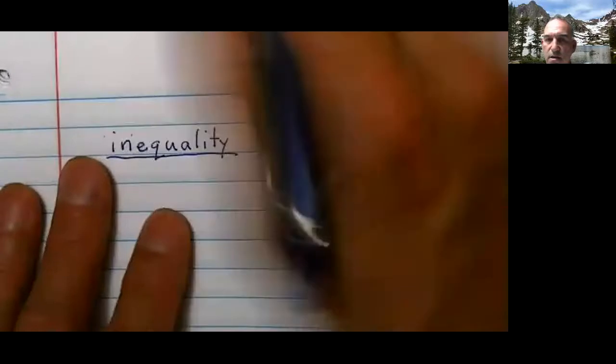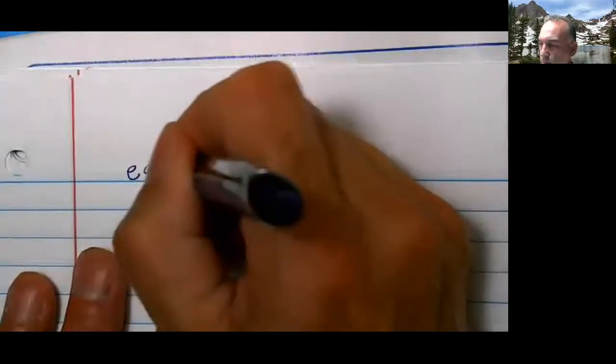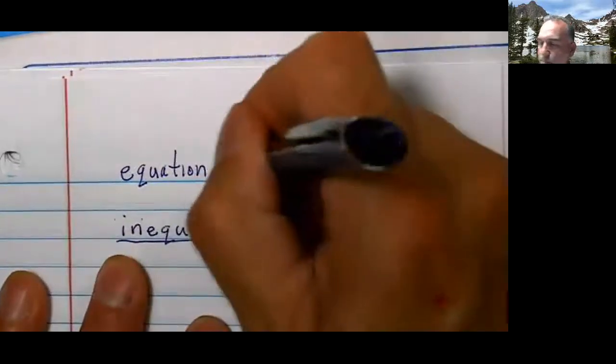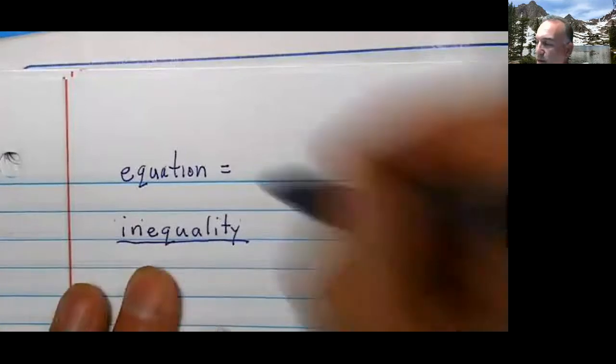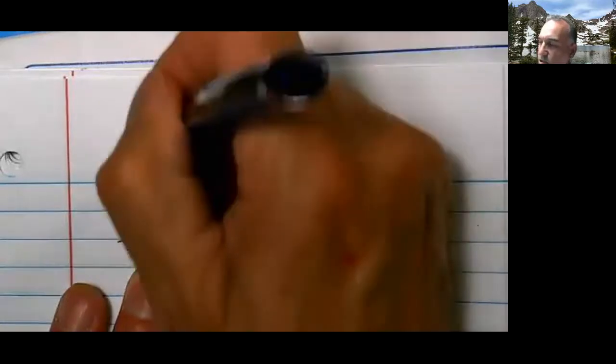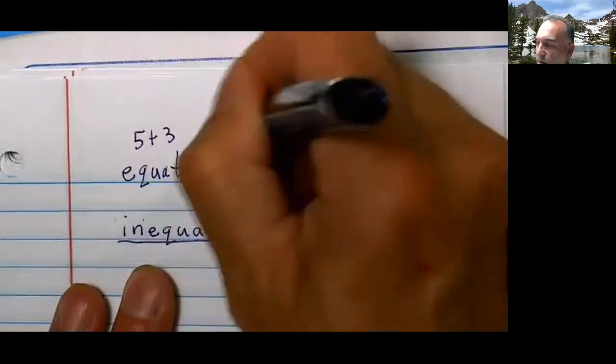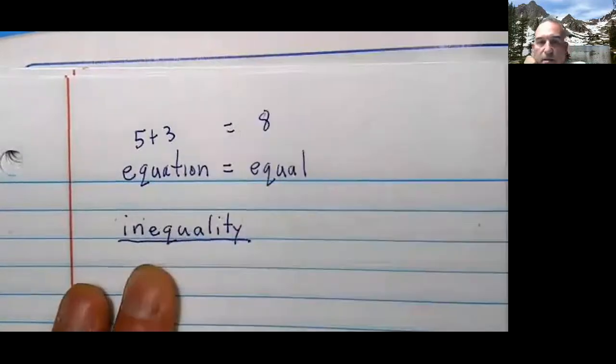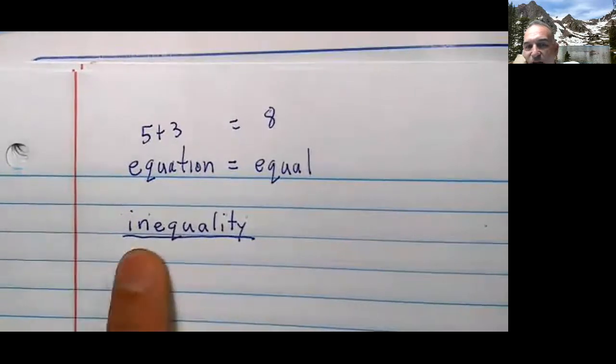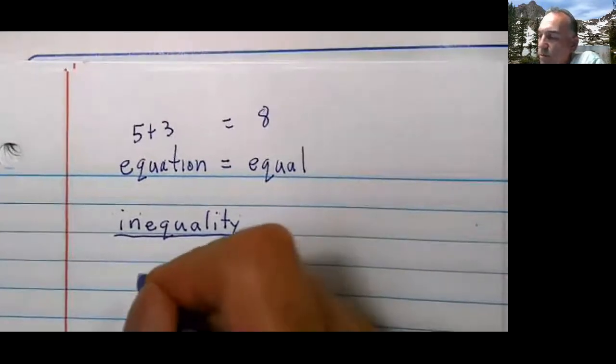When you had the equation, an equation must be equal. So if I have 5 plus 3, this other side must equal 8. That is an equation. An inequality has these other symbols. Notice that, watch this one.